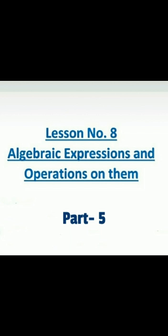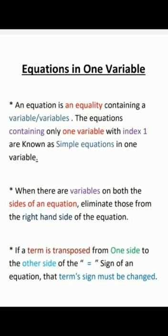Let's continue with lesson number 8, Algebraic Expressions and Operations on Them — equations in one variable. An equation is an equality containing a variable. The equation containing only one variable with index 1 is known as a simple equation in one variable. When there are variables on both sides of an equation, eliminate those from the right-hand side. If a term is transposed from one side to the other side of the equal sign, that term's sign must be changed.